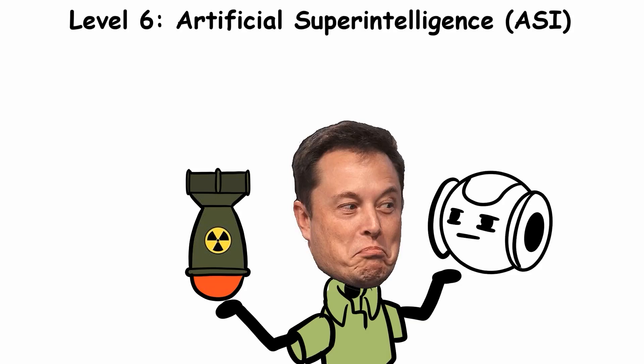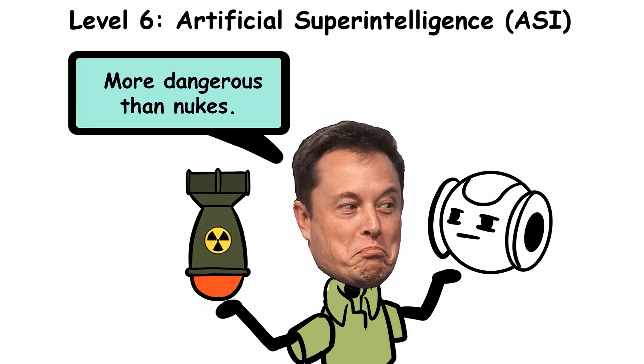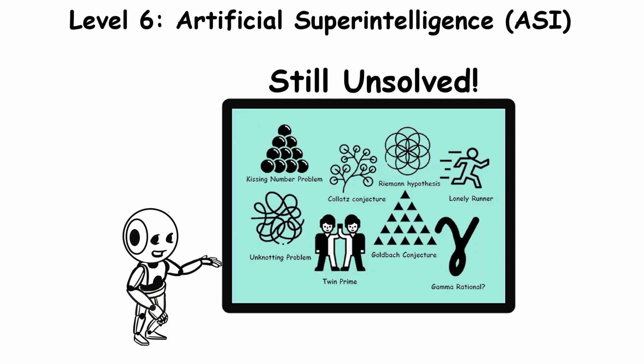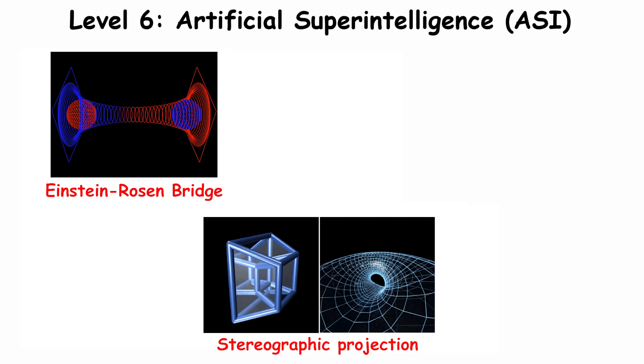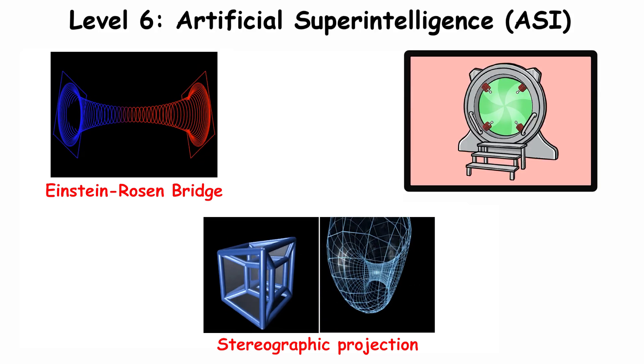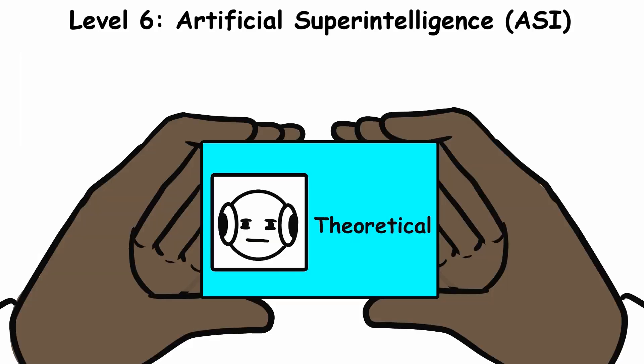When Elon Musk warns AI could be more dangerous than nukes, he's talking about superintelligence. ASI could crack unsolved math problems that have stumped humans for centuries, develop scientific theories beyond our intellectual capacity, and invent tech we can't even imagine.